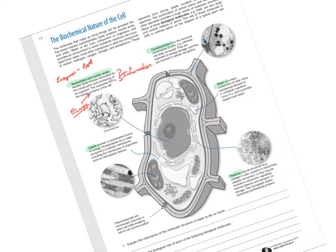ATP is the currency of the cell. There's also GTP and CTP as well — A, T, G, C triphosphates. Just as a hint: it's three phosphates, one, two, three, all linked together. So phosphate connected to phosphate connected to phosphate, connected to some kind of nucleotide. If there's an A, then you have ATP — three phosphates connected to A. If it's G, it's GTP. If it's C, it's CTP. And you can also have UTP.